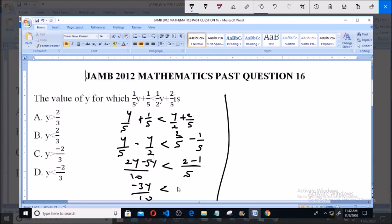Now when we cross multiply, we'll have 5 multiplied by minus 3y is less than 1 multiplied by 10, and that will give us minus 15y is less than 10.